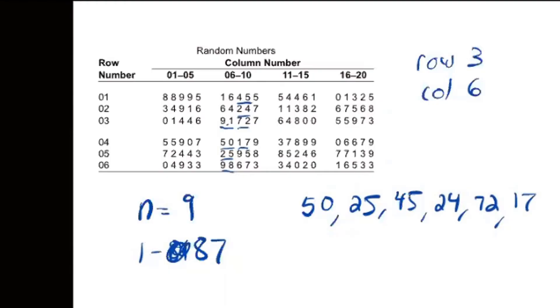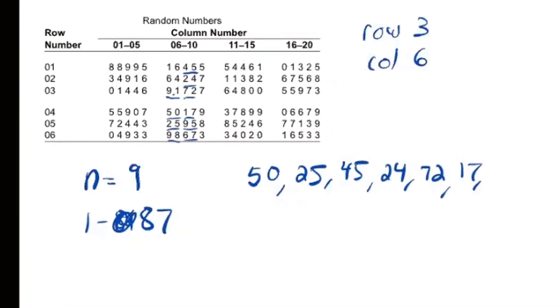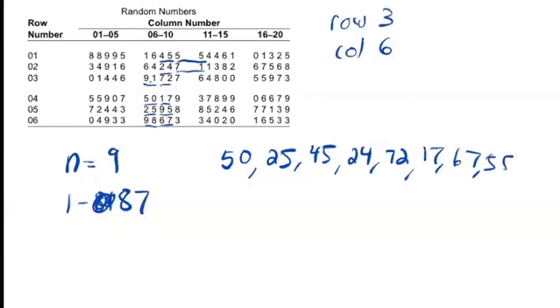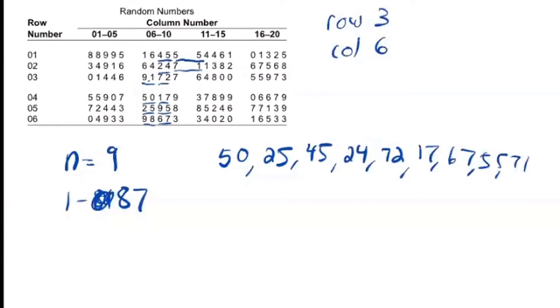The next one is 95—too big. The next one is 67, so I'll include that. Back to the top, now this time we ignore the big gap between those columns. So I'm going to go with 55. I think that was eight. And then the next one is 71. So those are the nine people I would include.